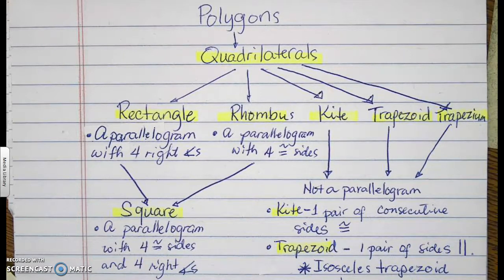I have subdivided quadrilaterals into four. I have a rectangle, rhombus, kite, trapezoid, and trapezium.